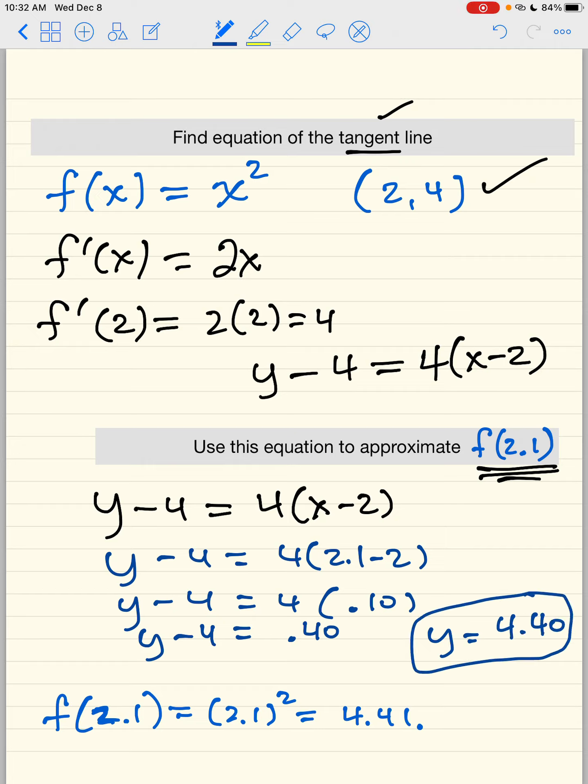That's a really good approximation. We know what the function is, so there's no reason to actually approximate it. We know what the function is. You can just plug 2.1 into the function, and you get 4.41. So you see the error is so small, 4.41, 4.4. So this is a really good approximation.